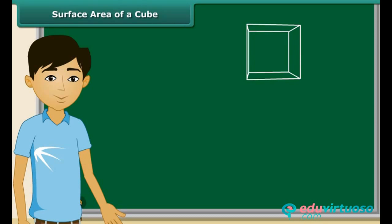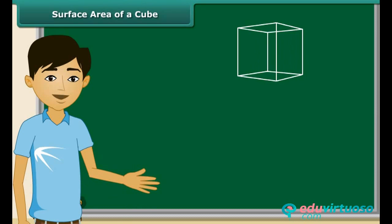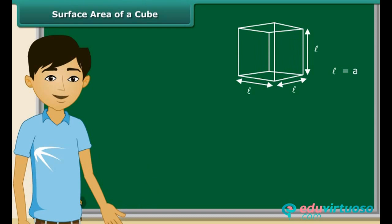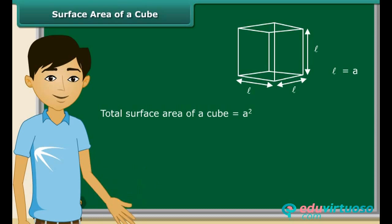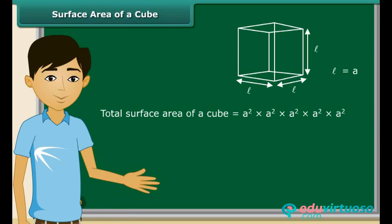Look at this cube. It is easy to see that the cube has 6 sides and each side is a square. To derive the formula of the surface area of a cube, let the length of one side be A. Since there are 6 sides, the total surface area is A square added six times, which is equal to 6A square.